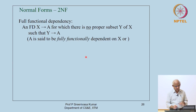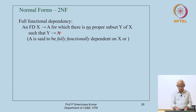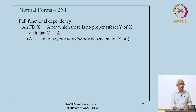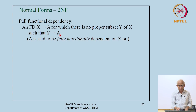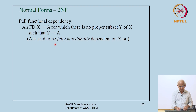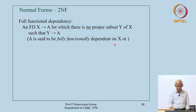In order to define second normal form, we need what is called a full functional dependency. If there is an FD X determines A for which there is no proper subset Y of X such that Y itself determines A, then we call this a full functional dependency. Otherwise, if such a Y exists, we say A is partially dependent on X.